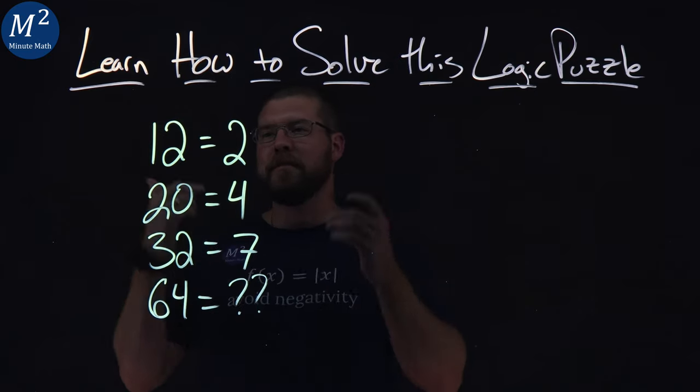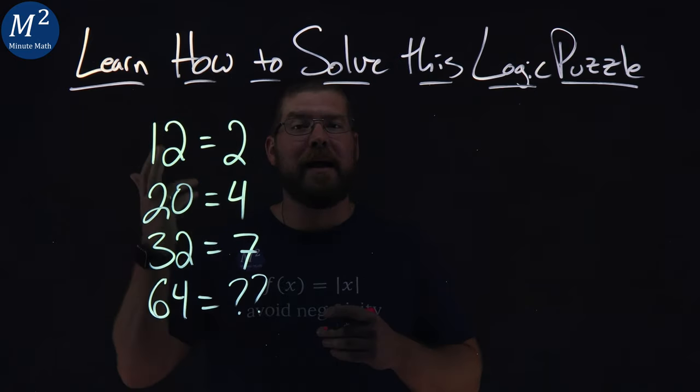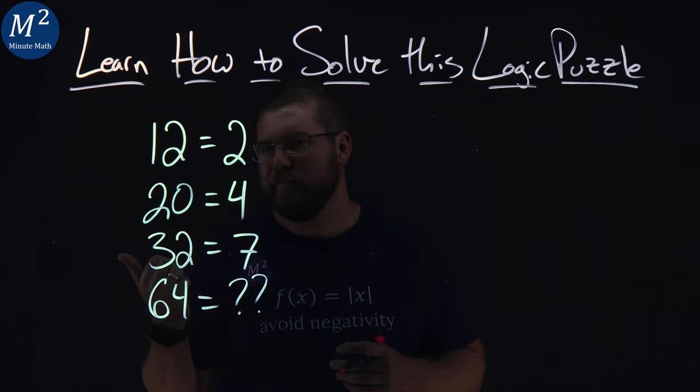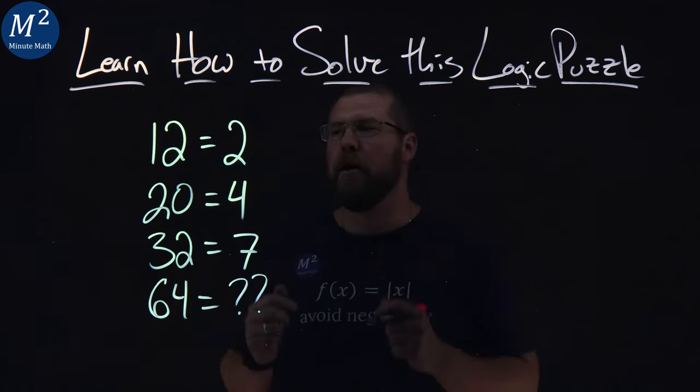Alright, so let's dive in. First thing I see, 12, 2. I'm like, oh, is it the last digit? Kind of looking at that. 2, 2, 24. Doesn't work out. 0, 4, 2, 7. No, no, no.